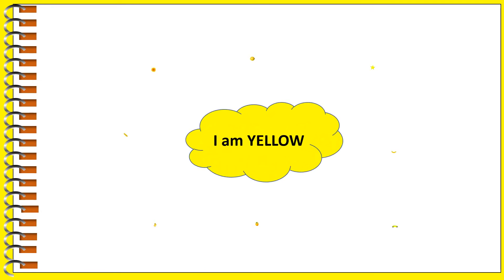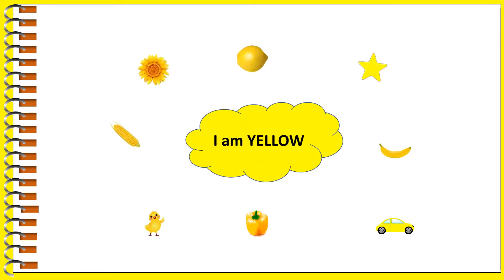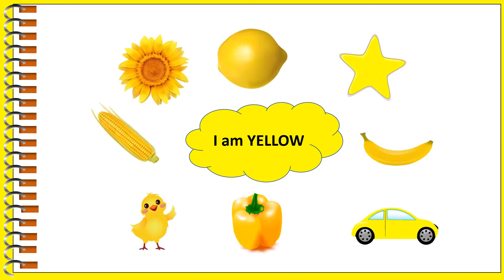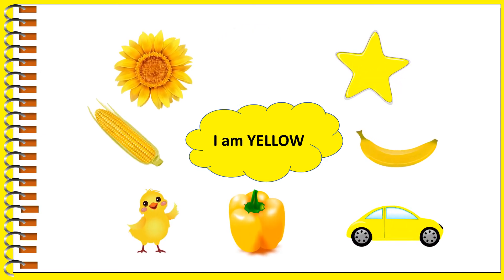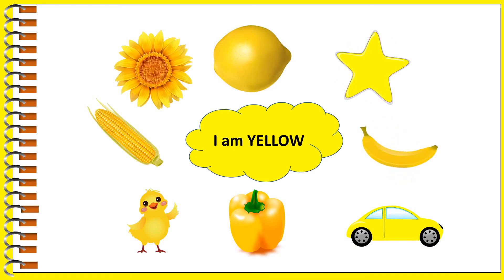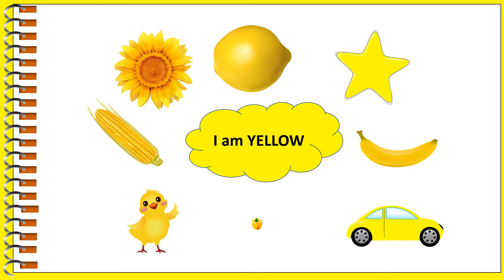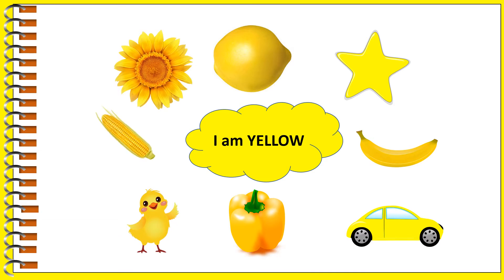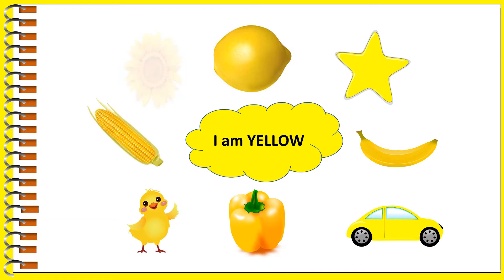I am yellow. Look at the objects which are in yellow color. Lemon, Star, Banana, Car, Capsicum, Corn, Sunflower.